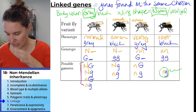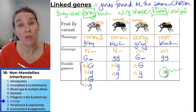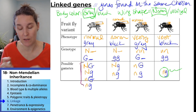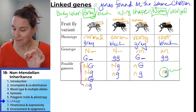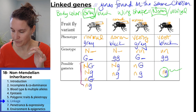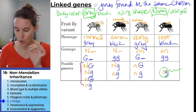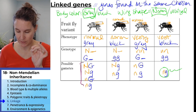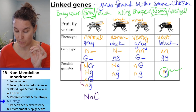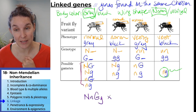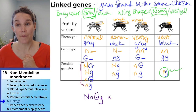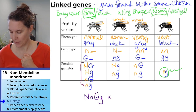Let's do a cross. We're going to cross a heterozygous normal gray fly — genotype big N little n, big G little g — times a homozygous recessive black vestigial fly — genotype little n little n, little g little g.